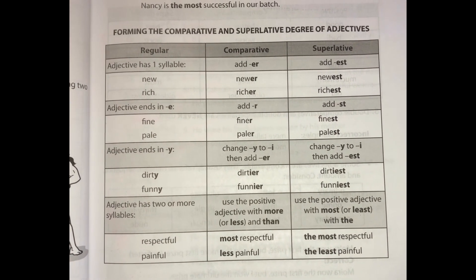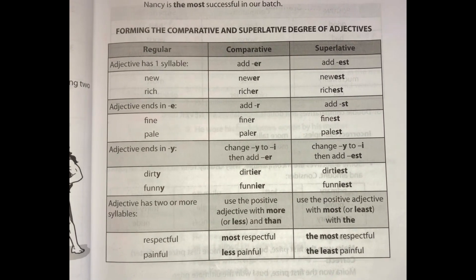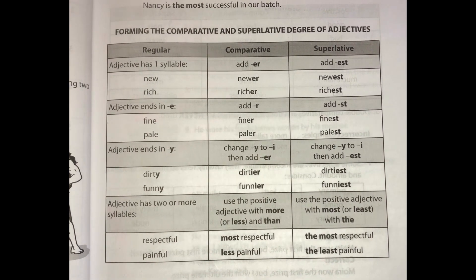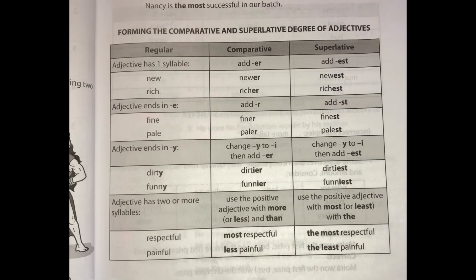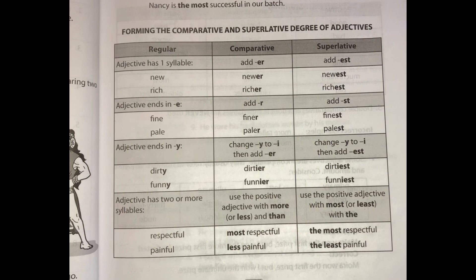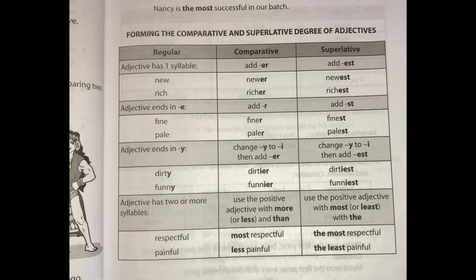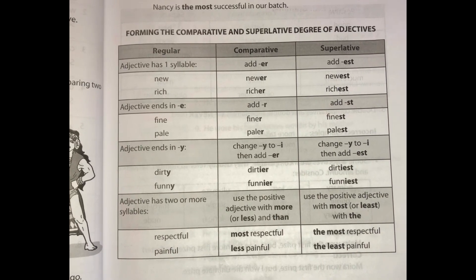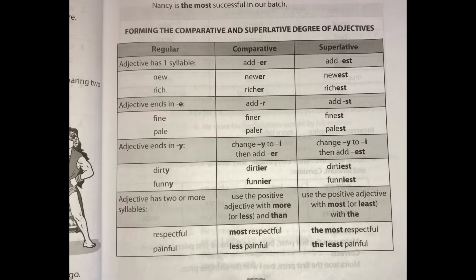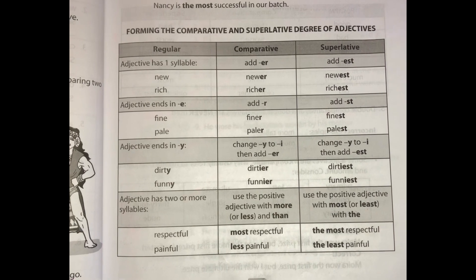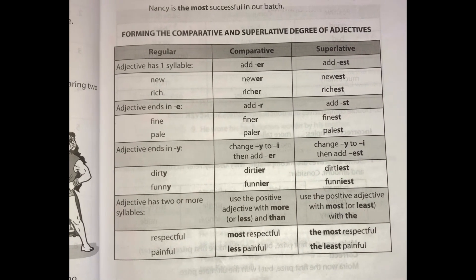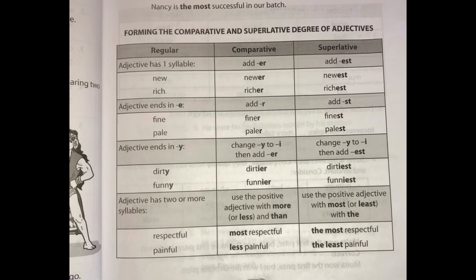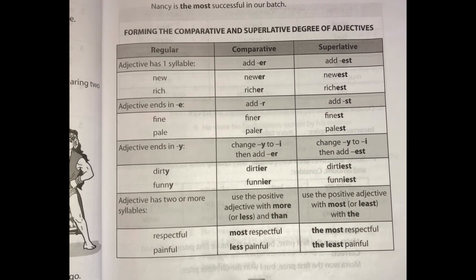Adjective ends in E: add -R for comparative and add -ST for superlative. Example: fine — finer — finest. Pale — paler — palest. Adjective ends in Y: change Y to I then add -ER for comparative; change Y to I then add -EST for superlative. Example: dirty — dirtier — dirtiest. Funny — funnier — funniest.